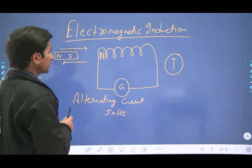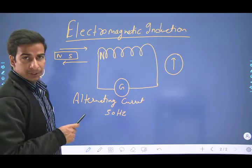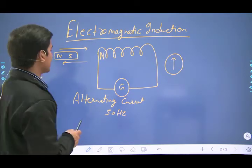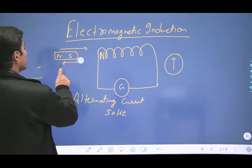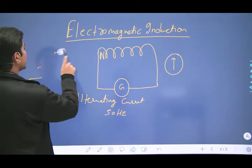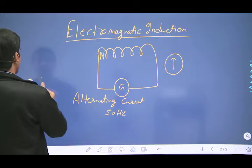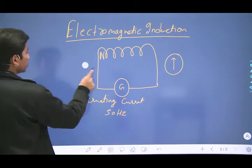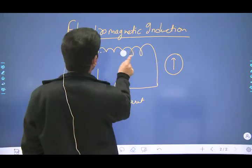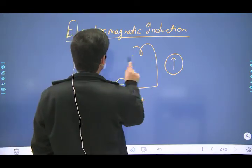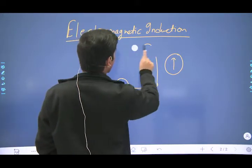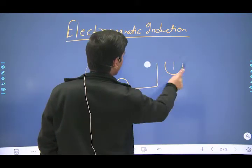This is the fundamental principle of electromagnetic induction. Induced current ki direction ko pata lagane ke liye, hum jis rule ko use karte hain, that is known as Fleming's Right Hand Rule.